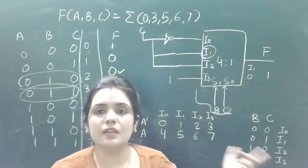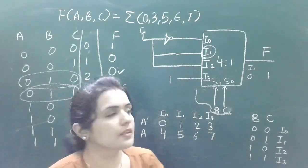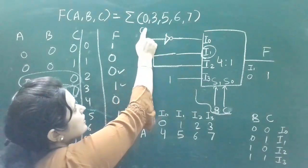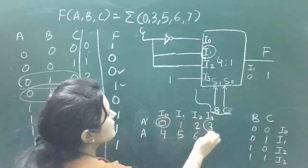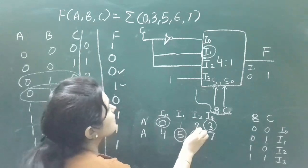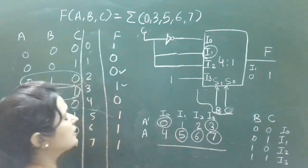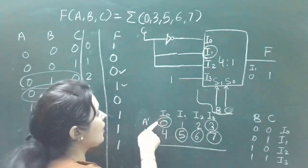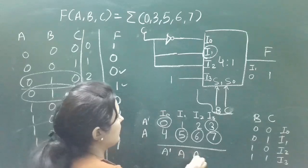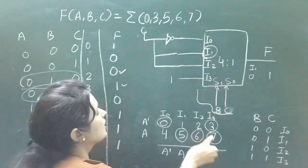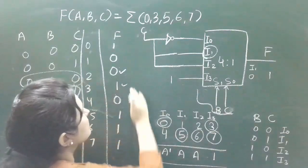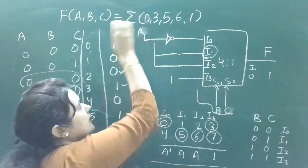The next step is circling the minterms where output is 1: minterms 0, 3, 5, 6, and 7. In column I0, the upper minterm (0) is circled, so write A-complement. In column I1, the lower minterm (3) is circled, so write A. In column I2, minterm 5 is circled (lower), so write A. In column I3, both minterms 6 and 7 are circled, so write 1.